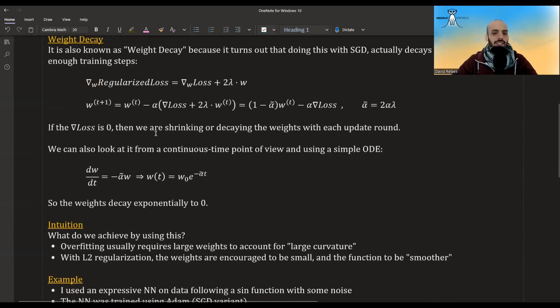If we look at it from a continuous time point of view, suppose t is continuous. Then we can look at the difference in w's divided by the difference in time. Again, we ignore the loss or assume it's zero. So we just have w(t+1) minus w(t). This is the dw. And we have minus two alpha lambda times w. This is a differential equation, very simple one. The solution to it is this. You can verify it. If you take the derivative with regards to t, you just get minus alpha tilde times the original thing times the w.